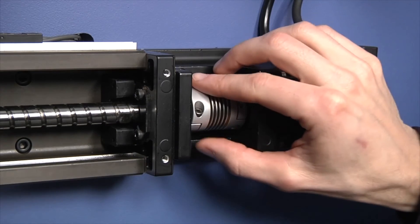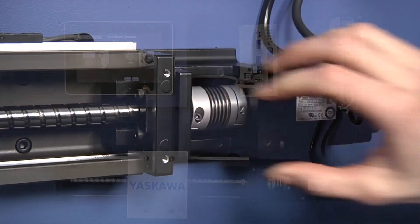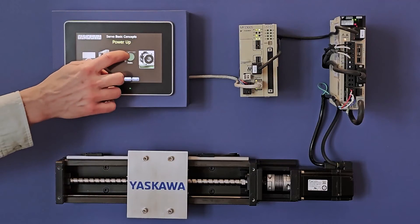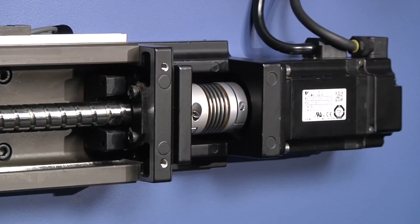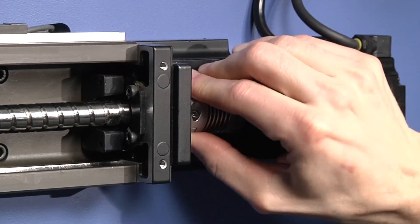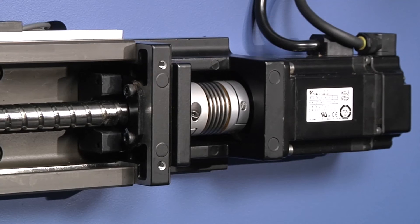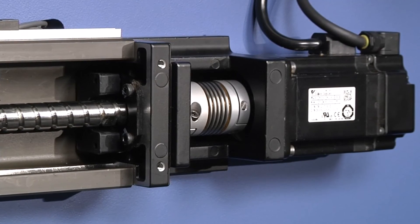Before the servo is enabled, the shaft will easily move. But if you manually try to turn the shaft while the servo is enabled, it will hold its position. You may hear a hissing sound as the servo works to maintain this position.